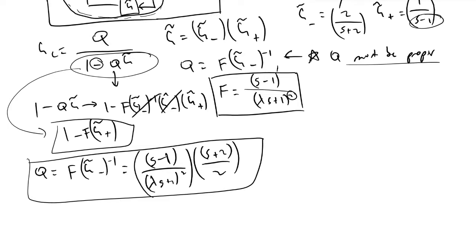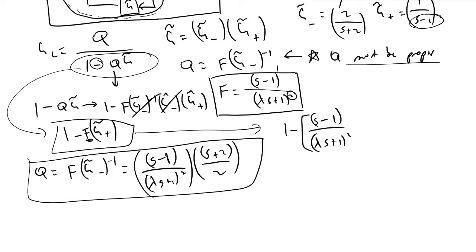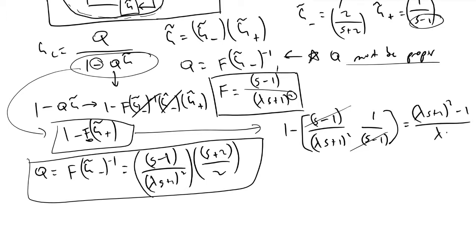I made an error — the denominator simplification should have filter F multiplying G̃⁺. So expanding the denominator: 1 minus F times G̃⁺ gives 1 minus [(S-1) over (λS+1)²] times [1 over (S-1)]. The S minus 1 terms cancel, eliminating that positive pole. Further simplifying, we find the denominator is [(λS+1)² minus 1] divided by (λS+1)².